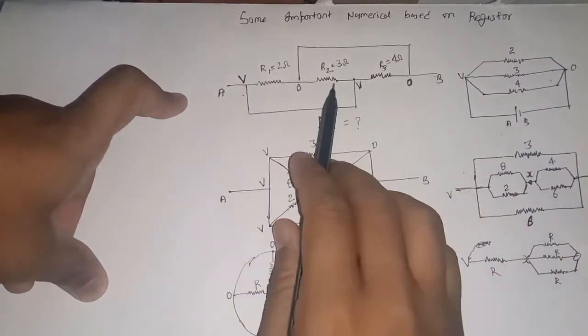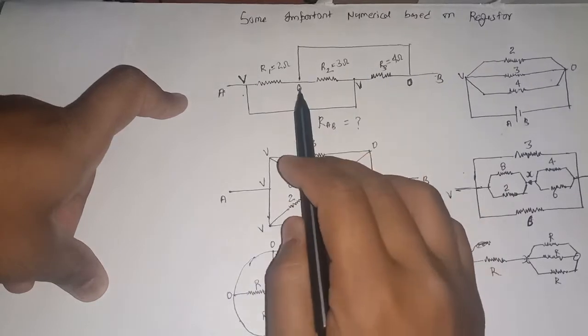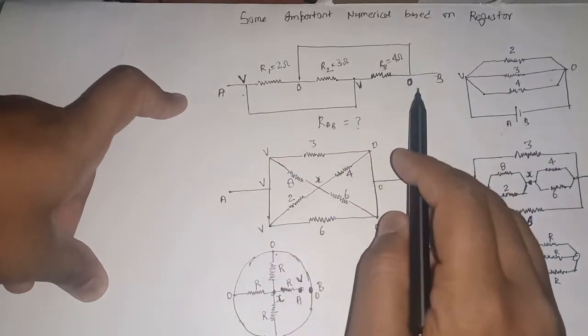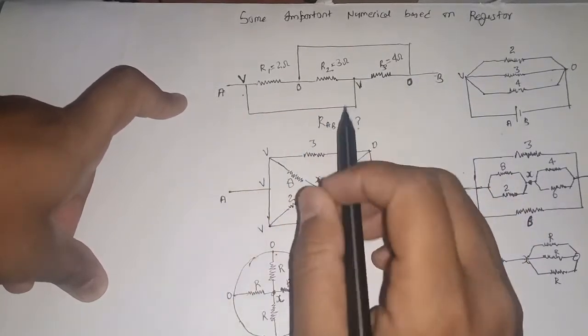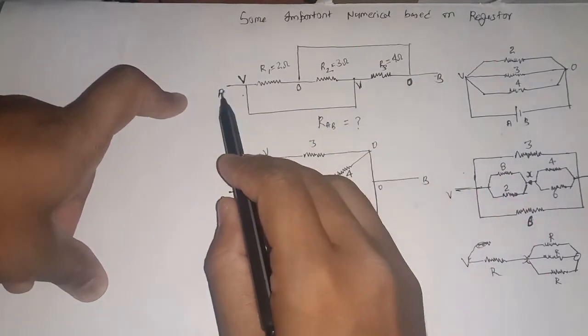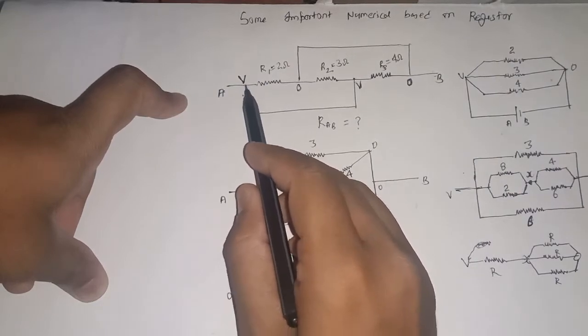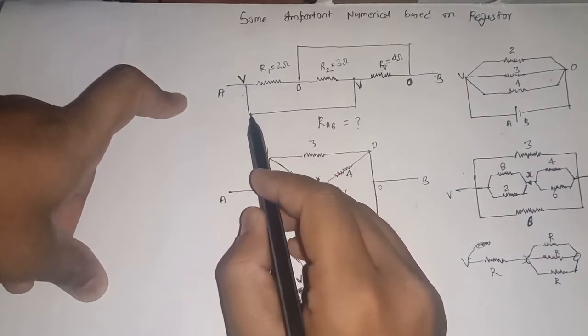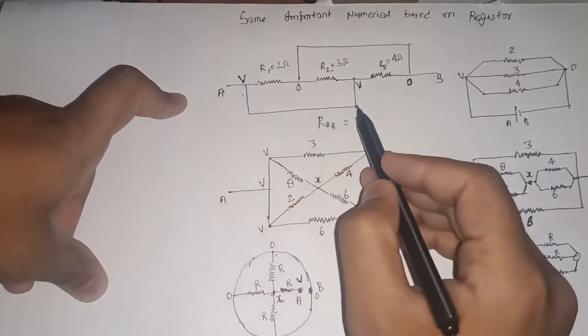Here I have three registers and here I have two wires. I have a known potential V, so you will know that this wire is full of potential V because there is no register.